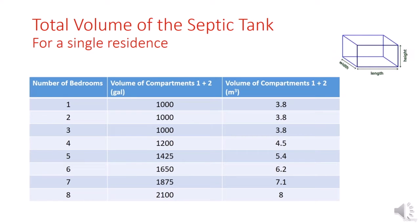Let's see what is the total volume of the sedimentation tanks when designing a wastewater treatment plant for a single residence or one house. The volume is width times length times height. As you can notice from the table, the total volume of both the first and second sedimentation tanks is based on the number of bedrooms. The minimum volume is 1,000 gallons or 3.8 cubic meters, which applies for up to three bedrooms. As the number of bedrooms increases, the volume will also increase.